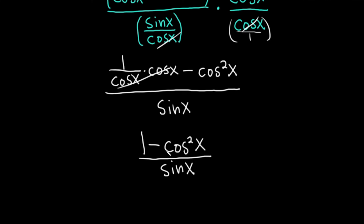This is an identity: 1 minus cosine squared is the same as sine squared. This is divided by sine, so you just get sine of x.